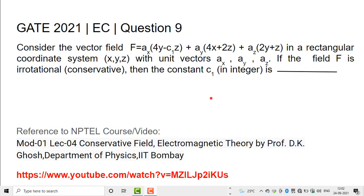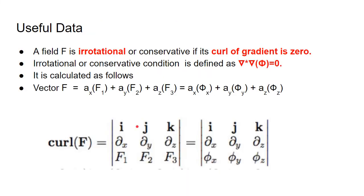To know the concept of a field being irrotational, let us discuss it briefly. A field F is irrotational or conservative if its curl is zero. The condition for irrotational or conservative is defined as del cross F equals zero.